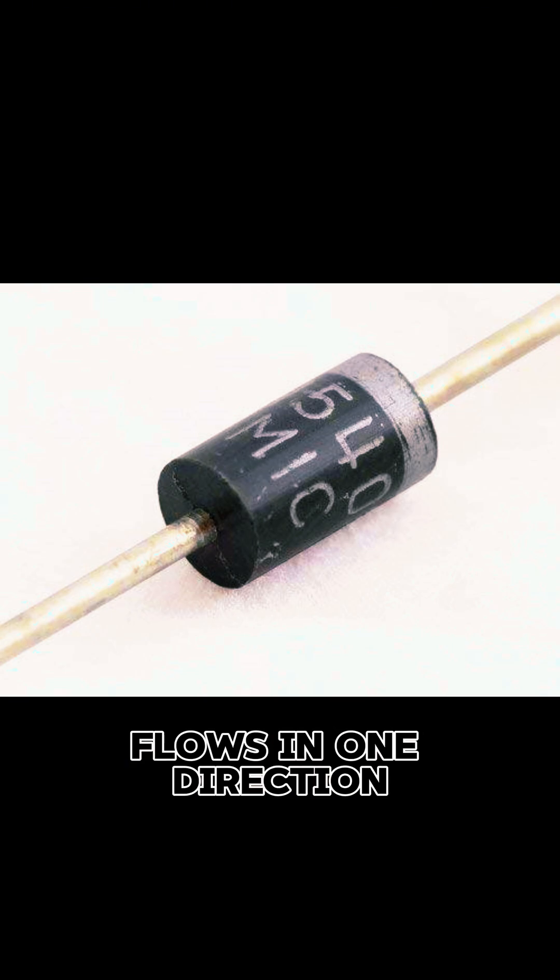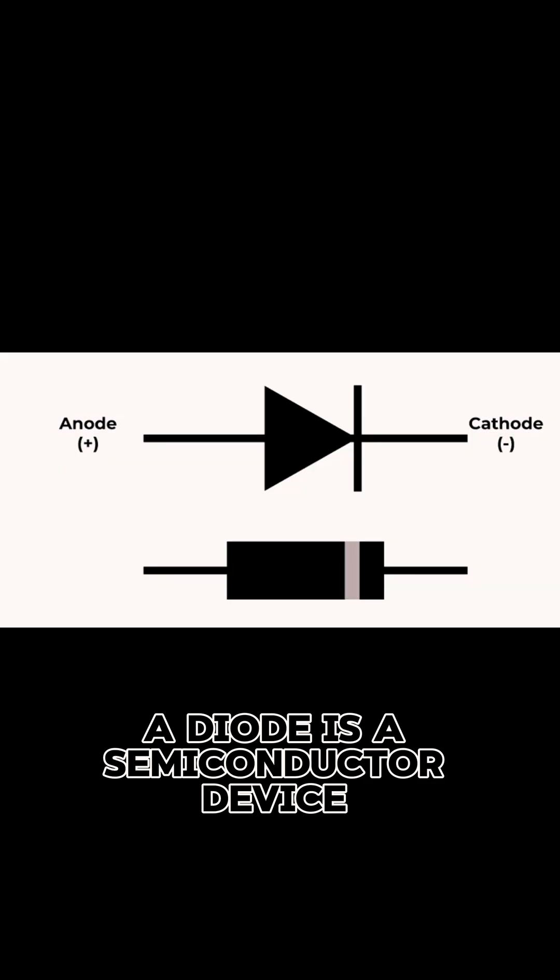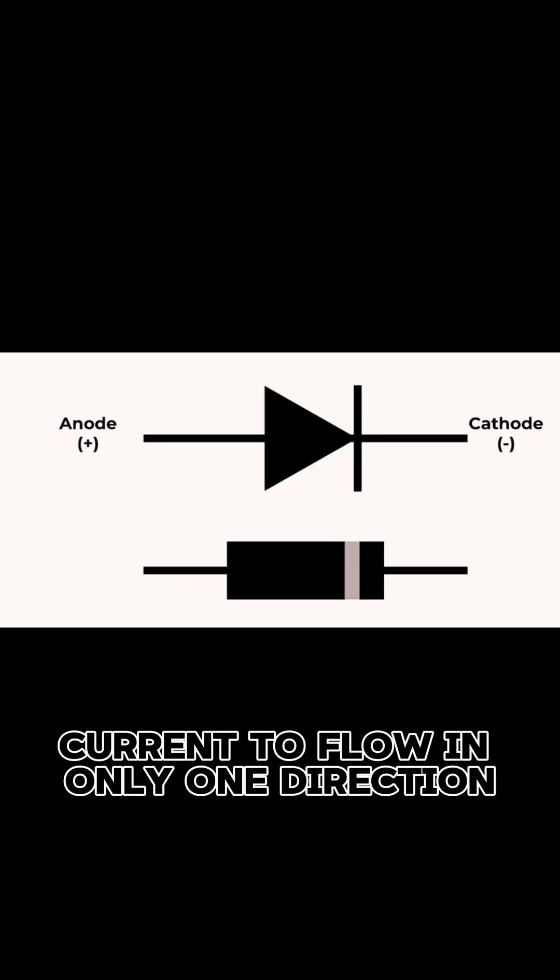Ever wondered how electricity flows in one direction but not the other? That's where the diode comes in. A diode is a semiconductor device that allows current to flow in only one direction.